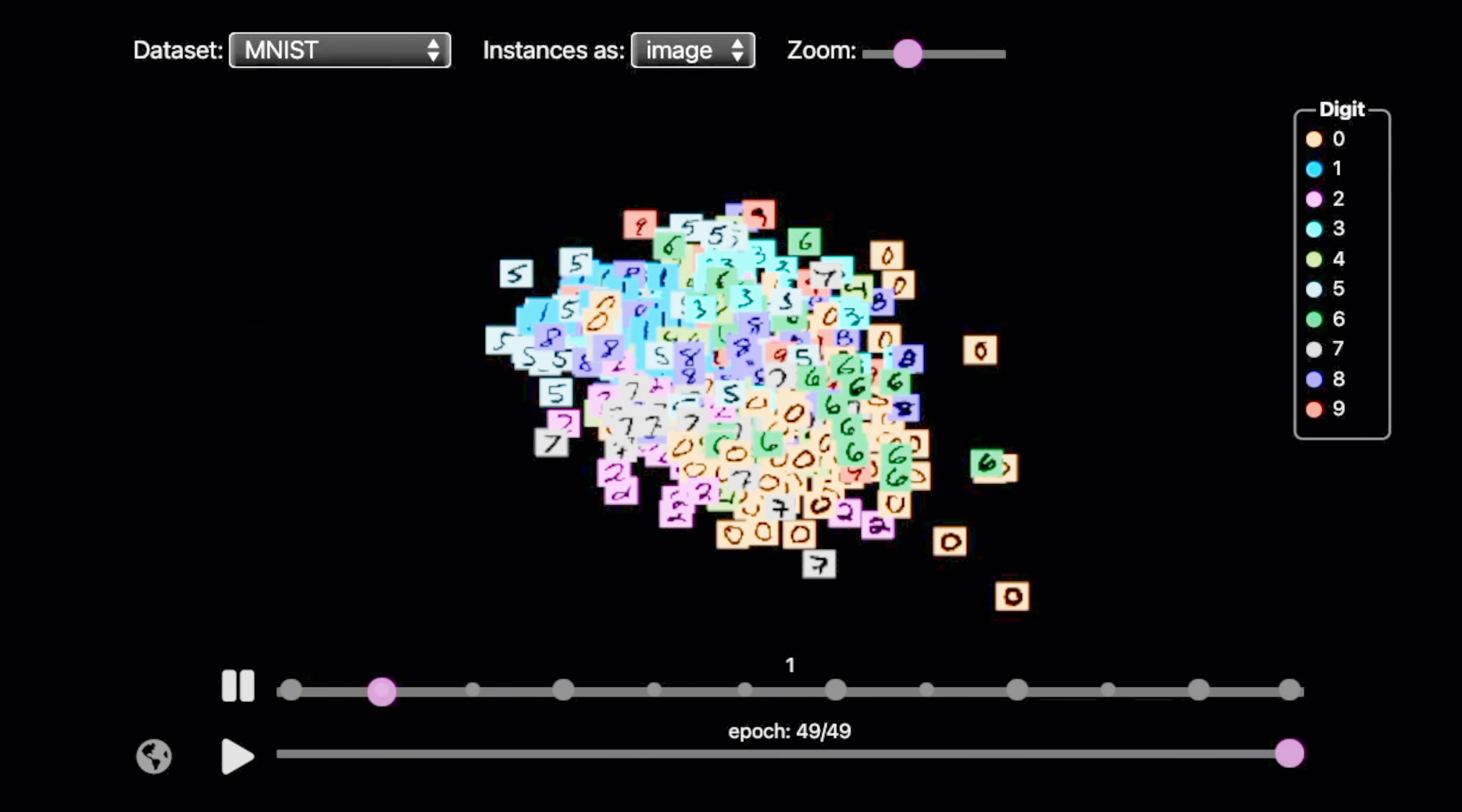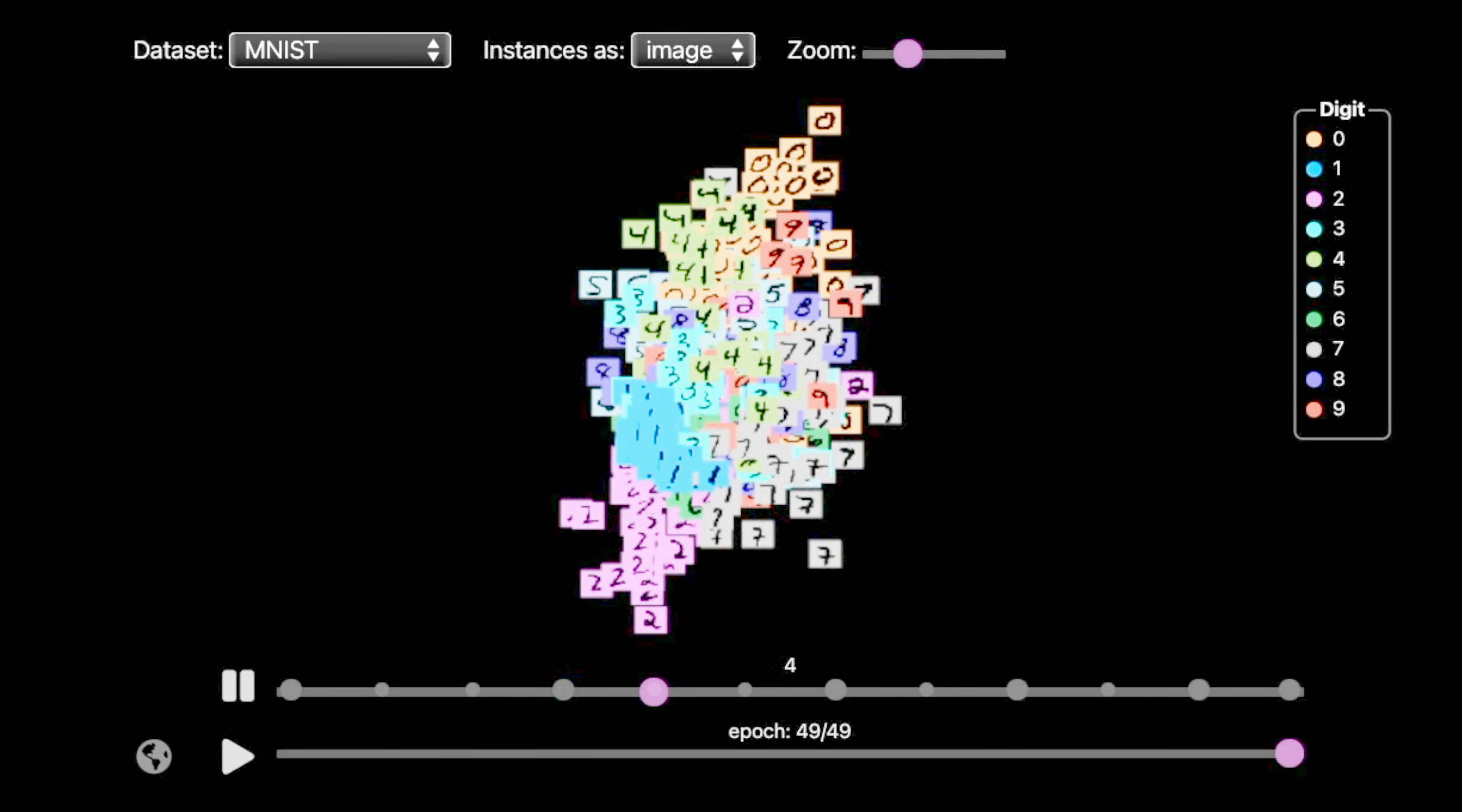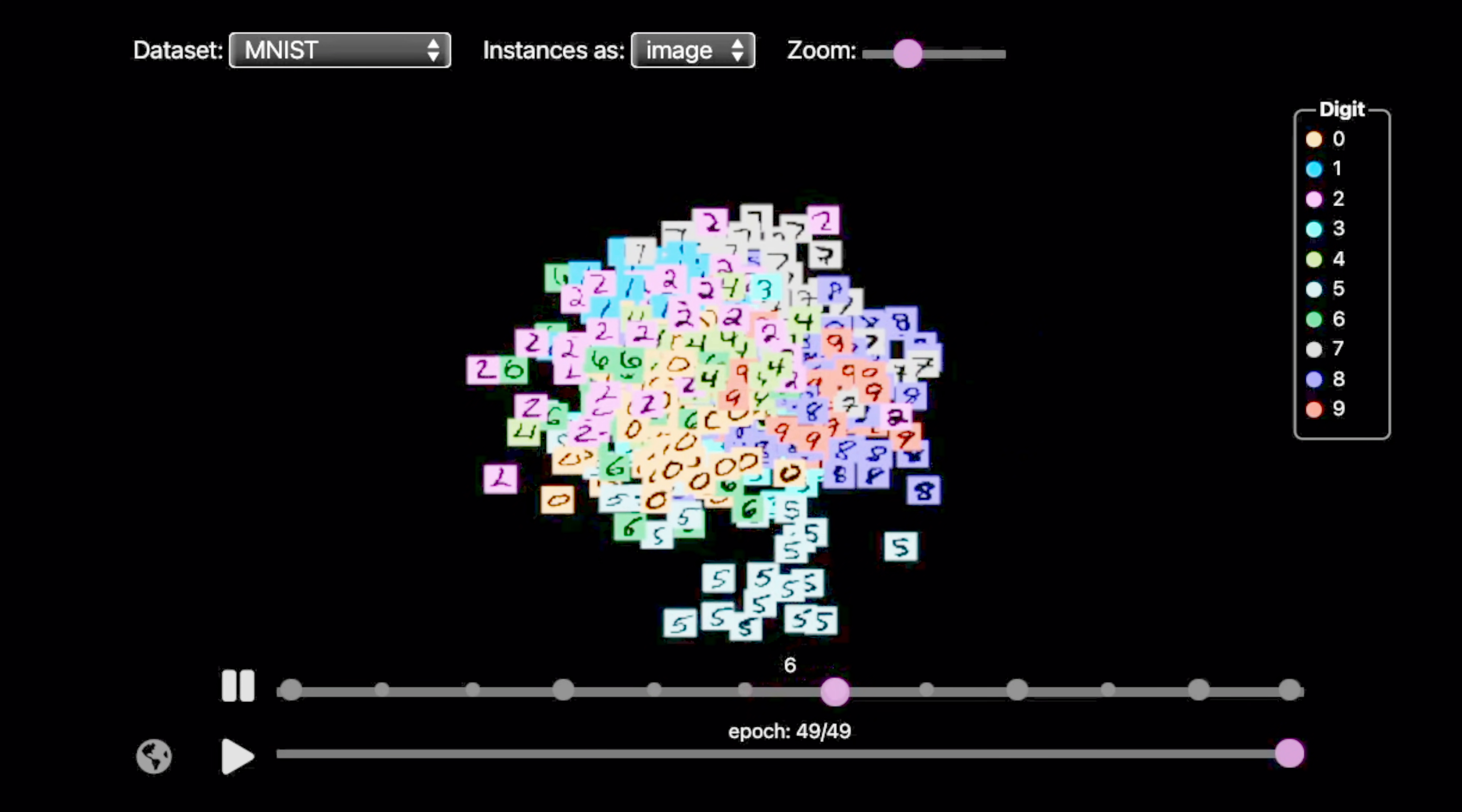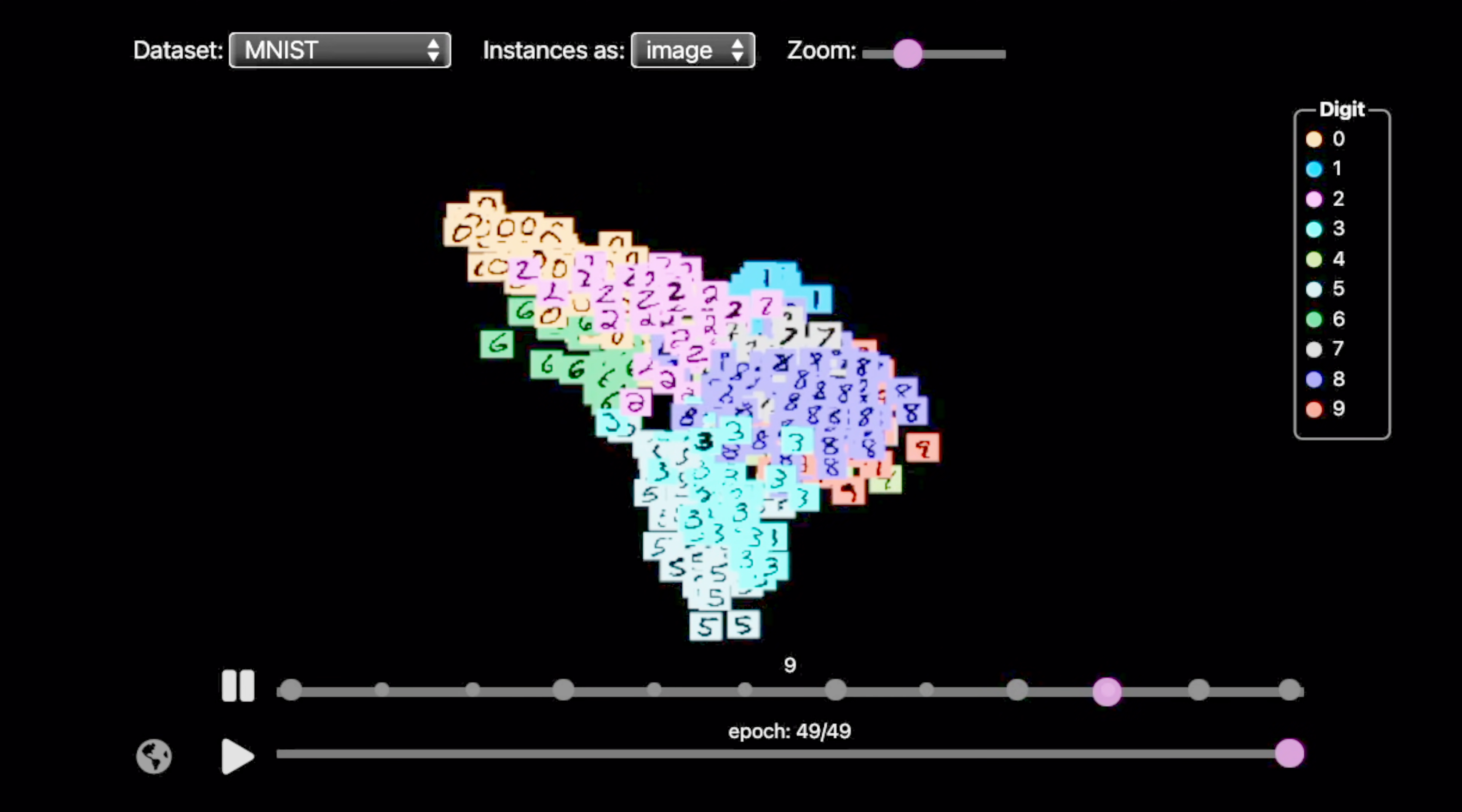Before I end the video, let's take a look at this transformation on handwritten digits. This wonderful interactive article on distill.pub has a tool that shows a couple of handwritten digits going through a neural network. Notice how the neural network performs operations to eventually separate the digits into clumps, which are easily separable.